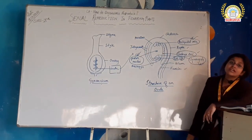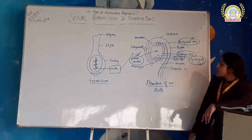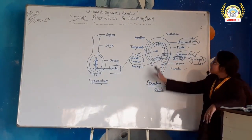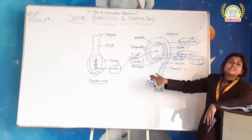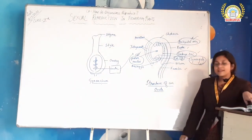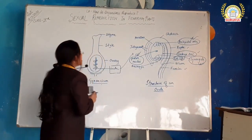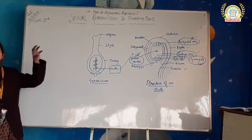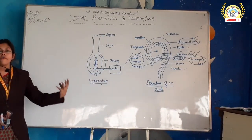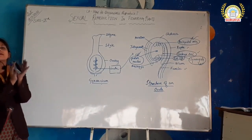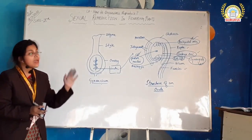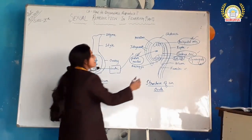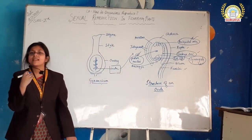An important function of the nucellus is that it is a nutritive tissue around the embryo sac. Another important thing to know is the micropyle — it is the portion from where the pollen tube enters the ovary. Now, as we have already discussed, pollen will fall on the stigma of a flower. Pollen grain consists of male gametes, and the ovule consists of female gametes. The female gamete is the egg cell.